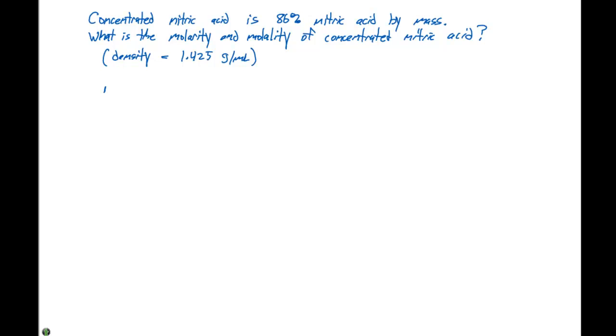So if we look at mass percent, which is what we're given, our mass percent is 86% nitric acid by mass. So that means that we're gonna have 86 grams of nitric acid, which is HNO3, per 100 grams of solution.